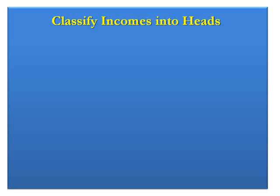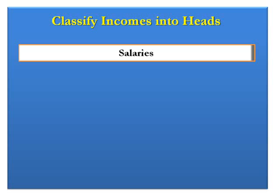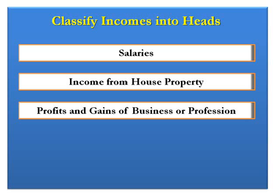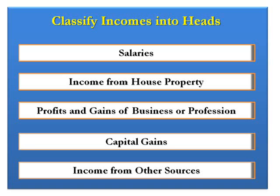Once we know the residential status of a person, we know which incomes of that person are taxable in India. The next step is to classify this income into five heads of income, based on the nature of each income. These five heads are: salaries — pensions and other receipts from employers; income from house property — rental income from letting off house property; profits and gains of business or profession; capital gains — income from sale of any capital asset; and income from other sources — a residuary head for any income not taxable under the above heads. It is mandatory, not optional, to classify income under these heads, as each head has different methods, deductions, and allowances.